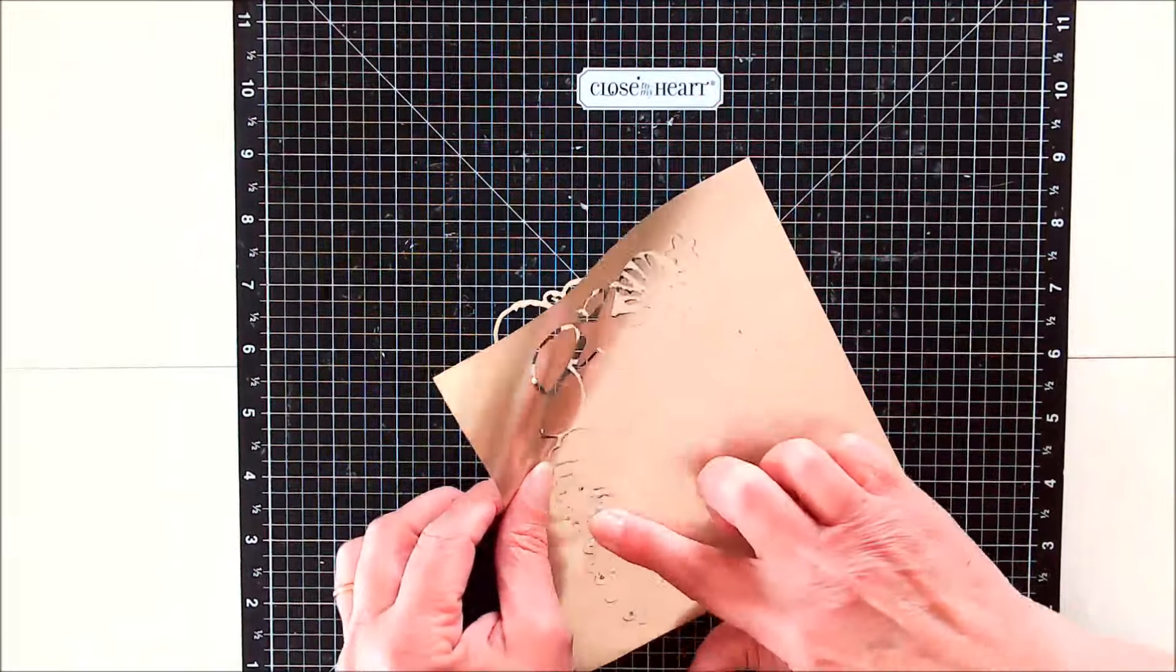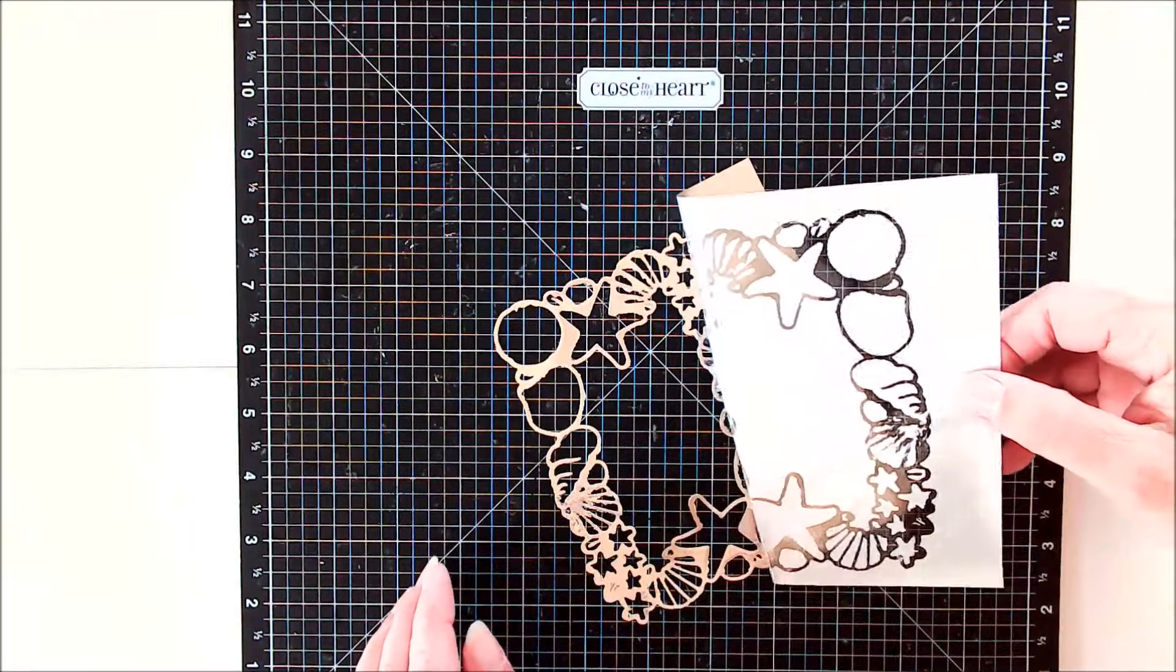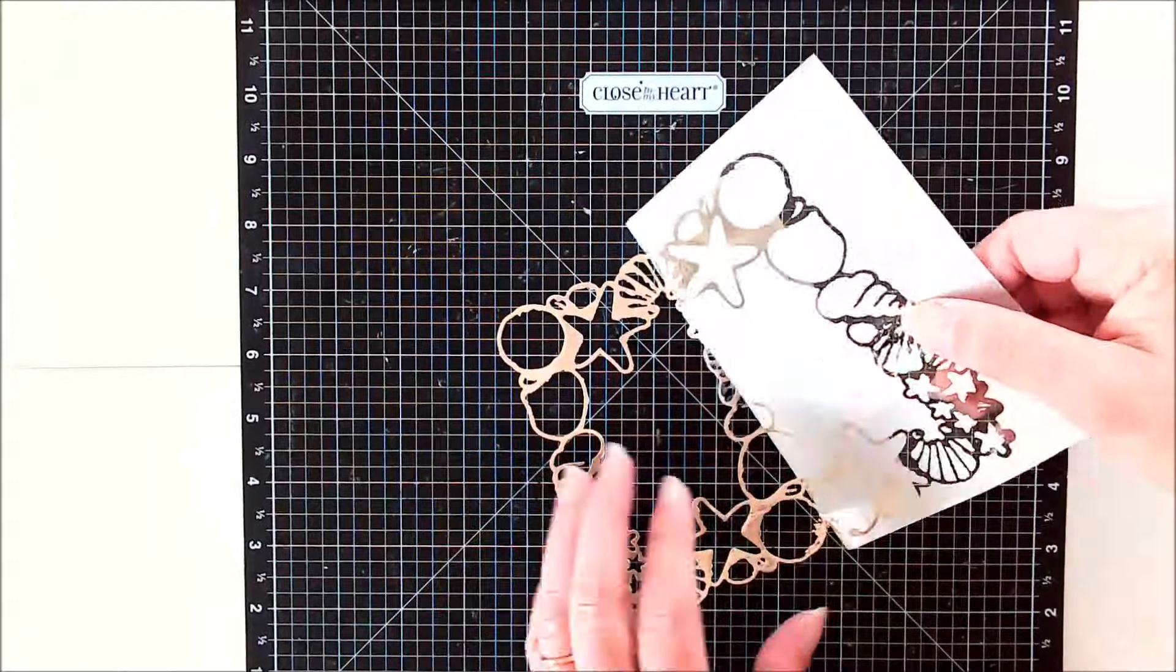Now, when you're sure that everything is covered, then you slowly and carefully peel back the foil sheet, and you will see that the foil has transferred to the item that you're putting it on.